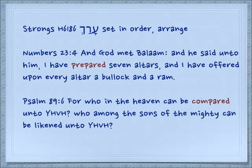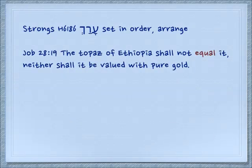So if we lay things out and we arrange them side by side, then we can compare them. Job 28:19: 'The topaz of Ethiopia shall not equal it, neither shall it be valued with pure gold.' So if we're comparing things, we can see which things are equal to each other and which things are not.